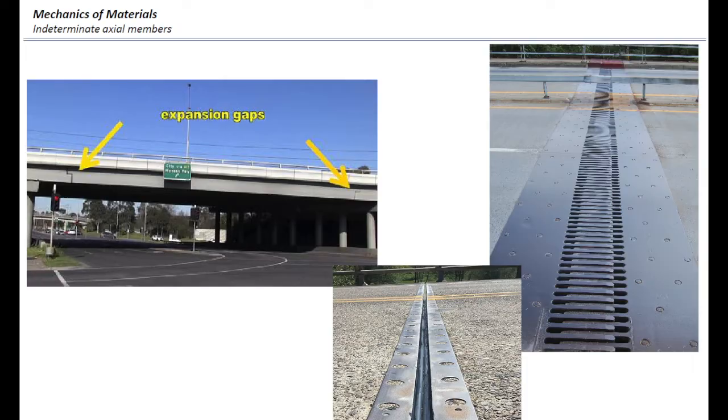To avoid that, engineers use expansion joints to allow for the free movement of the deck and avoid development of the internal forces that may cause damage in the bridge.